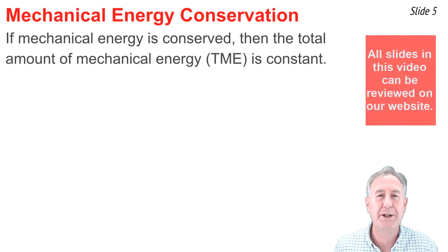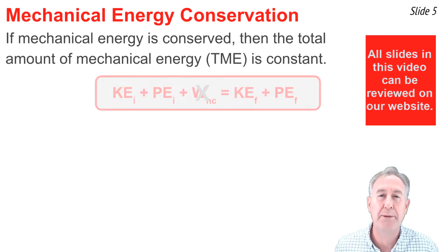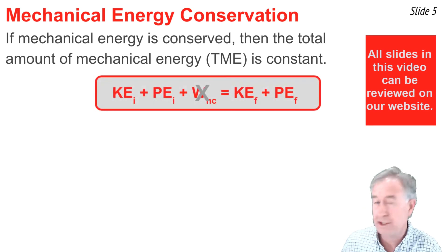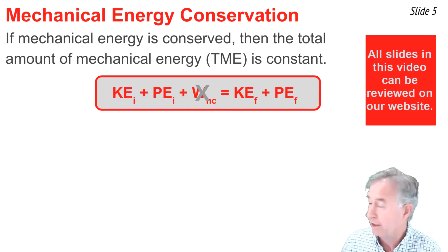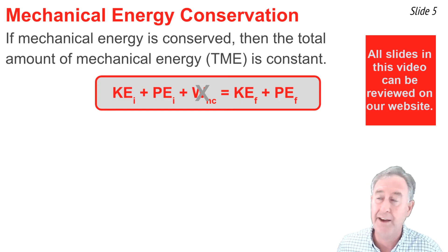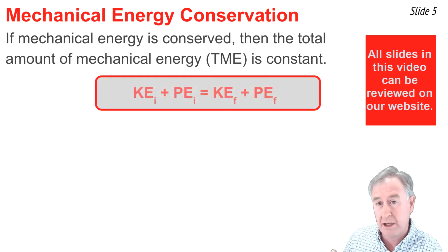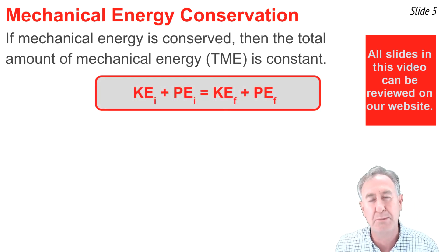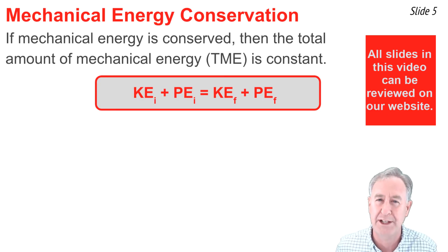In such situations, when the only forces doing work are conservative forces such as gravity, the total mechanical energy remains constant. When we say that mechanical energy is conserved, we mean that the total amount of it is constant. Total mechanical energy is conserved whenever the W-nc term in that equation is zero — it cancels out, and the equation becomes: kinetic plus potential energy initially equals kinetic plus potential energy finally.